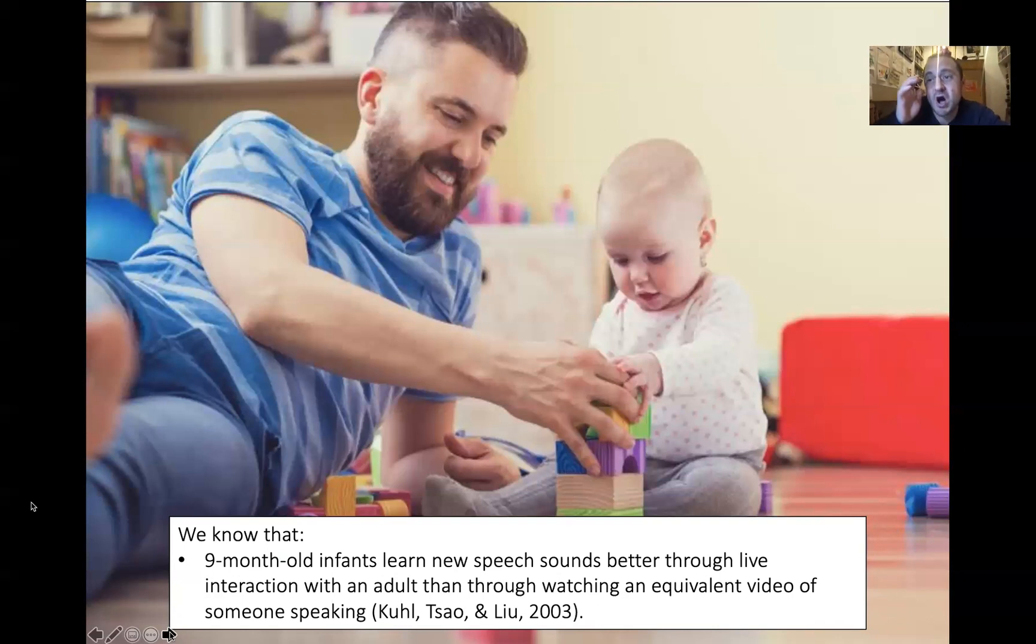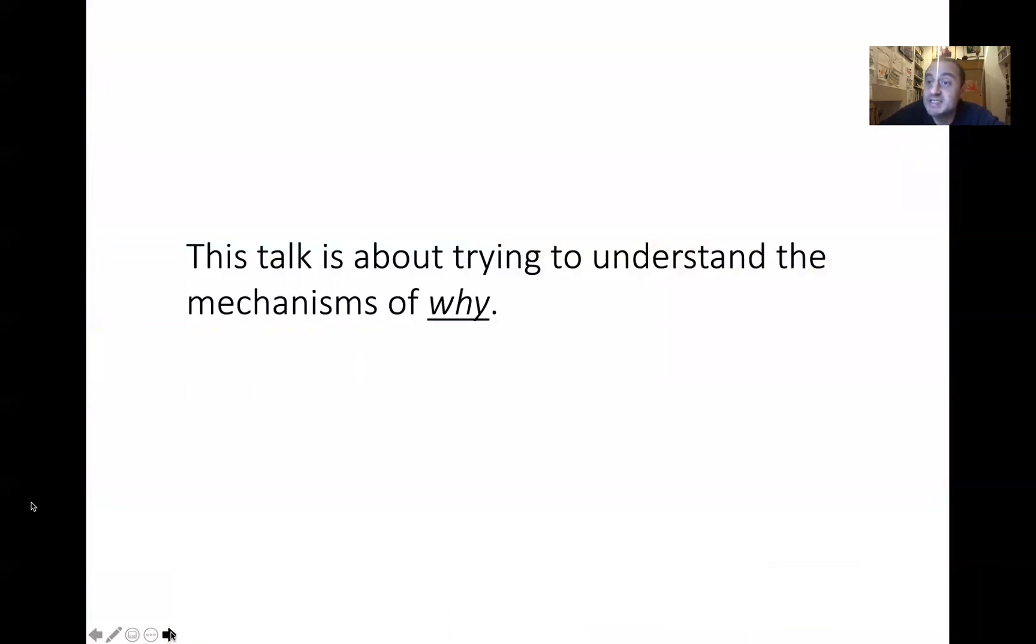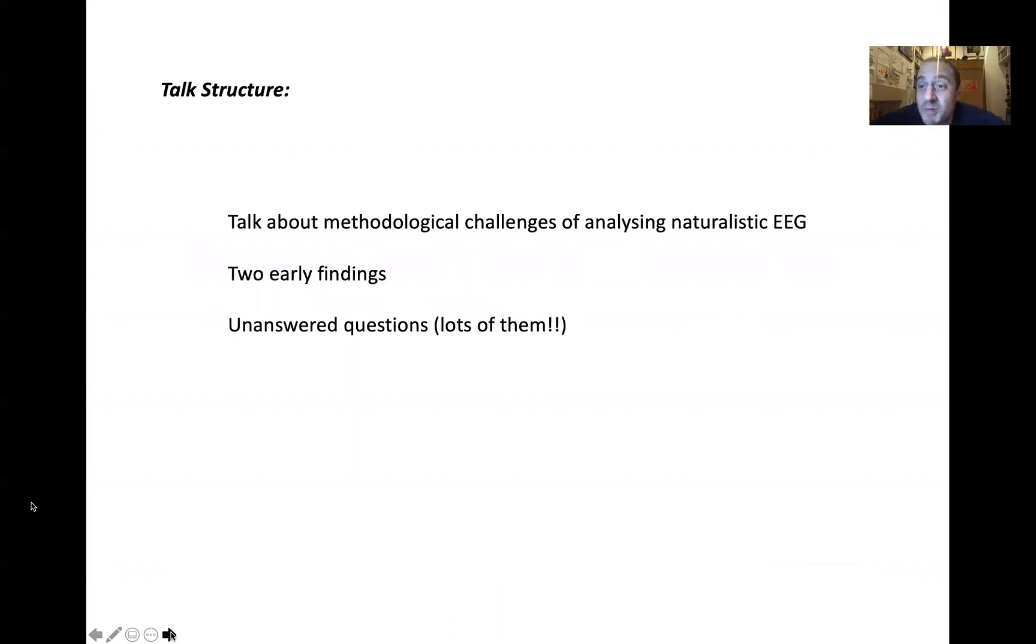We know that this affects learning too. When nine-month-olds learn new speech sounds, they learn better through live interaction with an adult than watching a video. That's Pat Koo who showed that. So we know that social interaction is bidirectional and makes a difference on how babies process information, pay attention, and learn. But our methods to measure brain function in babies aren't well set up to measure these bidirectional influences. So we're trying to understand the neural mechanisms subserving them.